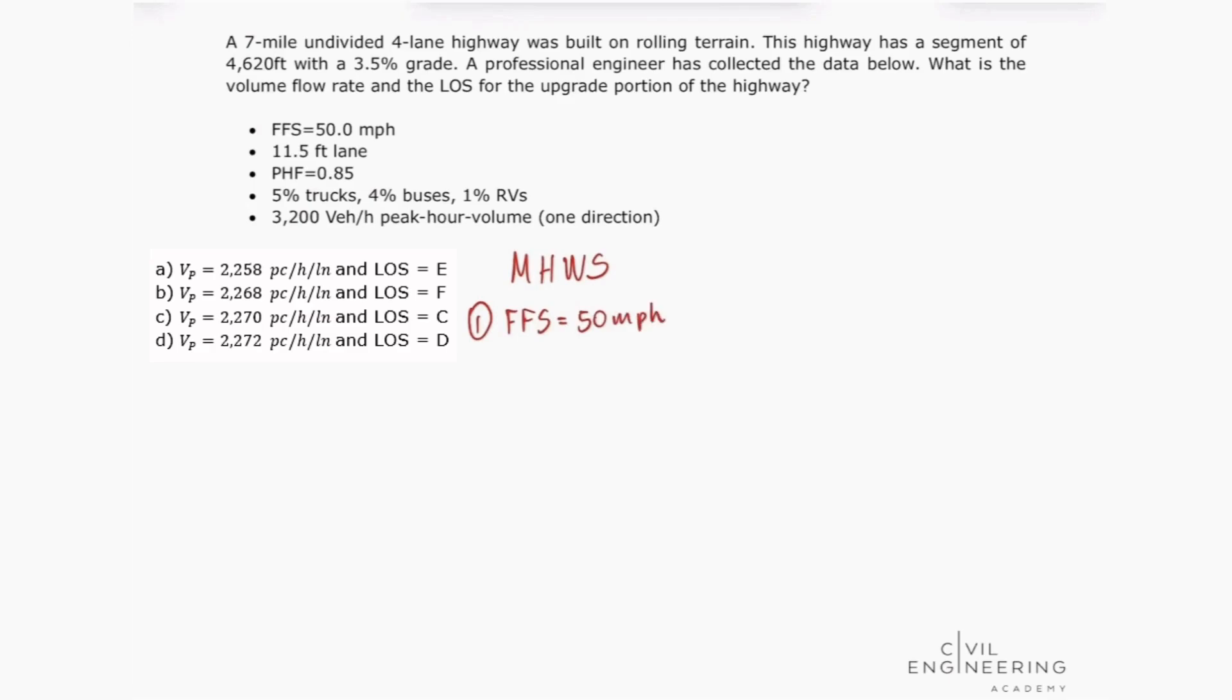And the problem is asking what is the volume flow rate and the level of service for the upgrade portion of the highway. So if we look at our highway capacity manual at chapter 12, at equation 12-9, we're going to see that our V sub P, our volume flow rate, is equal to our demand that was given divided by our peak hour factor.